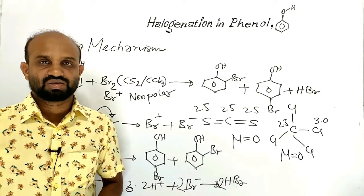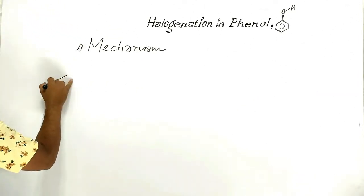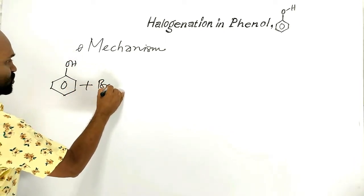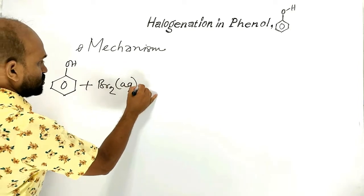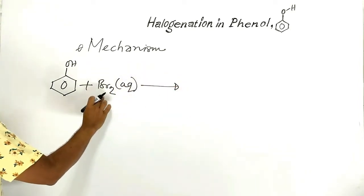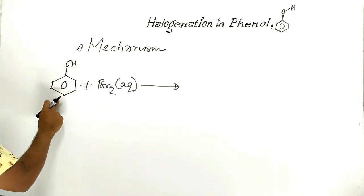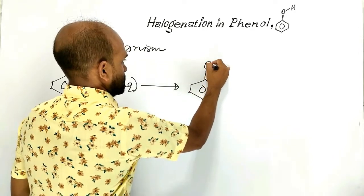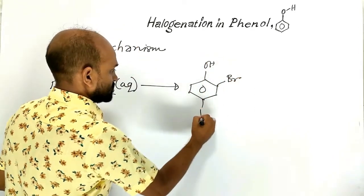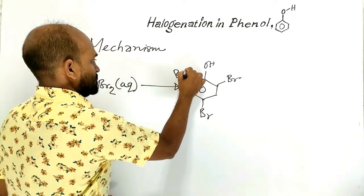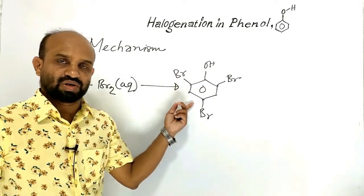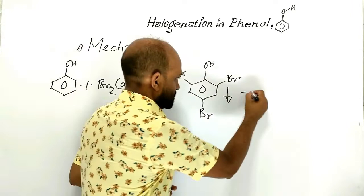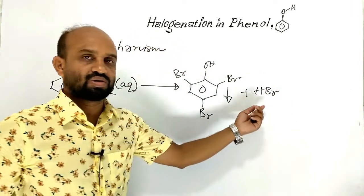Now let's see the mechanism of the second reaction: phenol with bromine solution in water. Bromine reacts with phenol to form 2,4,6-tribromophenol, which is a yellowish-white precipitate, and hydrogen bromide is formed as a by-product.